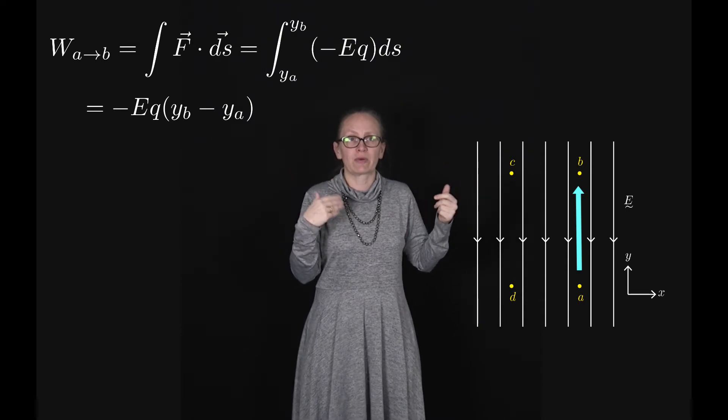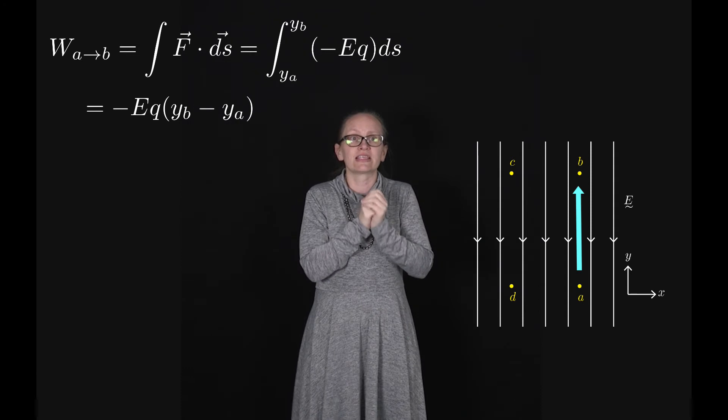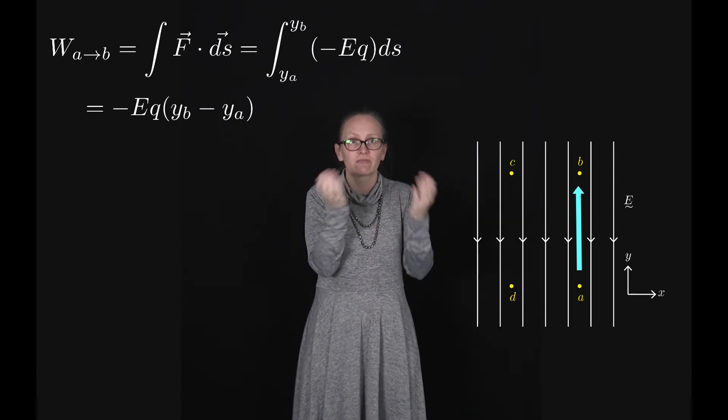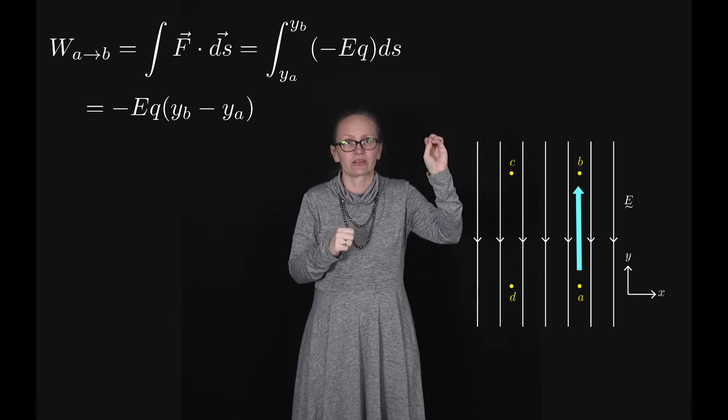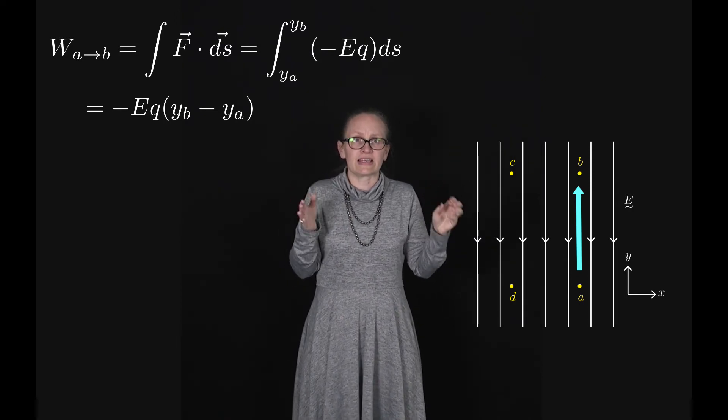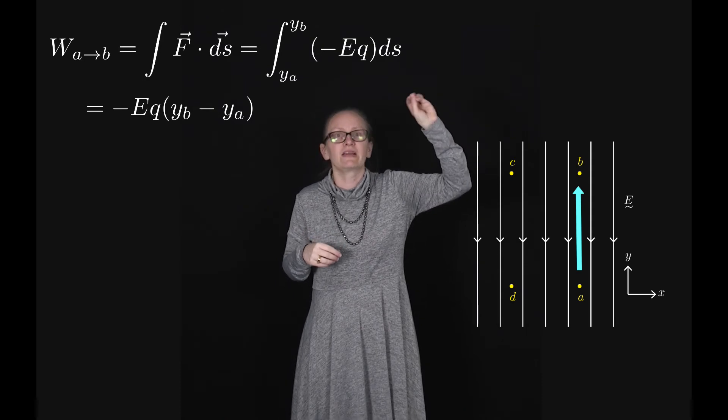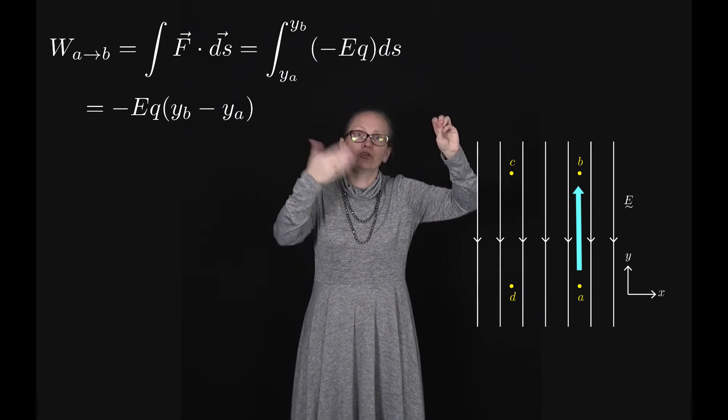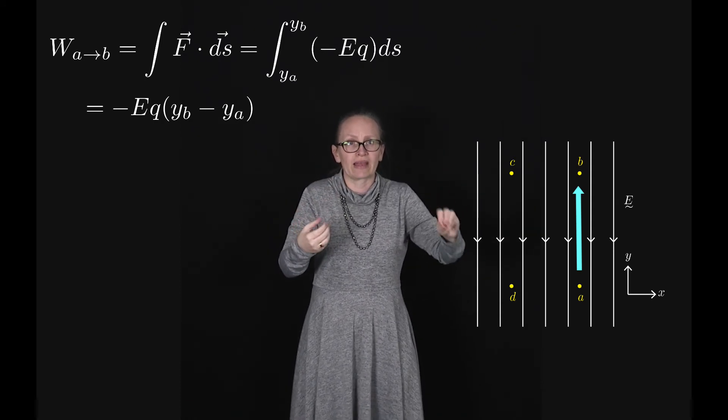So yb minus ya is positive as yb is higher than ya. So this is what we expect in this case as the force from the electric field is acting in the opposite direction to the direction that the charged particle is moving. Now this means that it has gained potential energy when it's gone from A to B. If we left it at B, it would then use this potential energy to gain kinetic energy to move back to A.